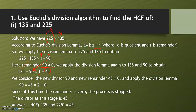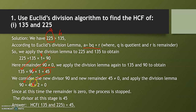The remainder is still not zero, so we continue the process. Now 90 becomes the dividend and 45 becomes the divisor. When you divide 90 by 45, it divides exactly two times and the remainder is zero. Since the remainder is zero, the HCF is 45.